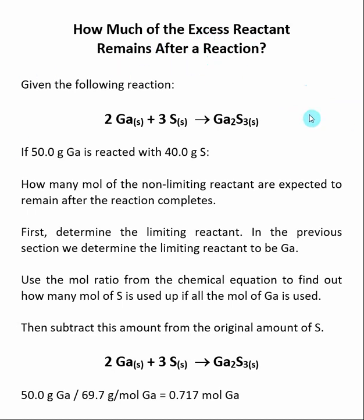We are going to build off the reaction that we were talking about in the previous section. We are still running a reaction involving 50 grams of gallium and 40 grams of sulfur, and we're asking how much of the non-limiting reactant is expected to remain.